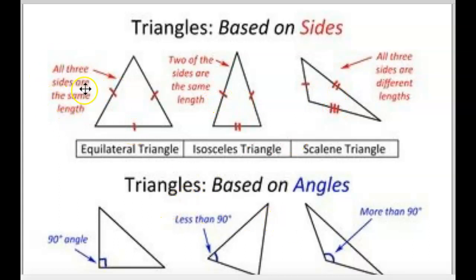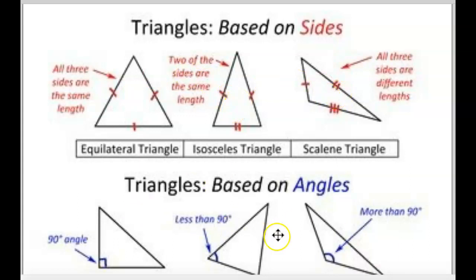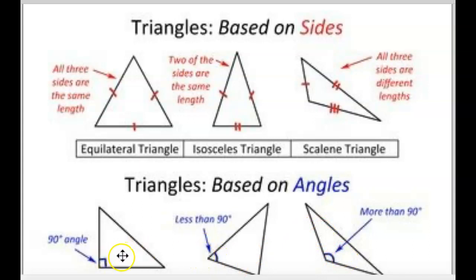I'm going to read you the blur in case you can't read it. These are triangles, but the ones on top in red are triangles that are based on the sides — we could talk about those three. The ones down here are triangles based on the angles that they make. That's the opening — if it's a Pac-Man mouth, how big or small it is.